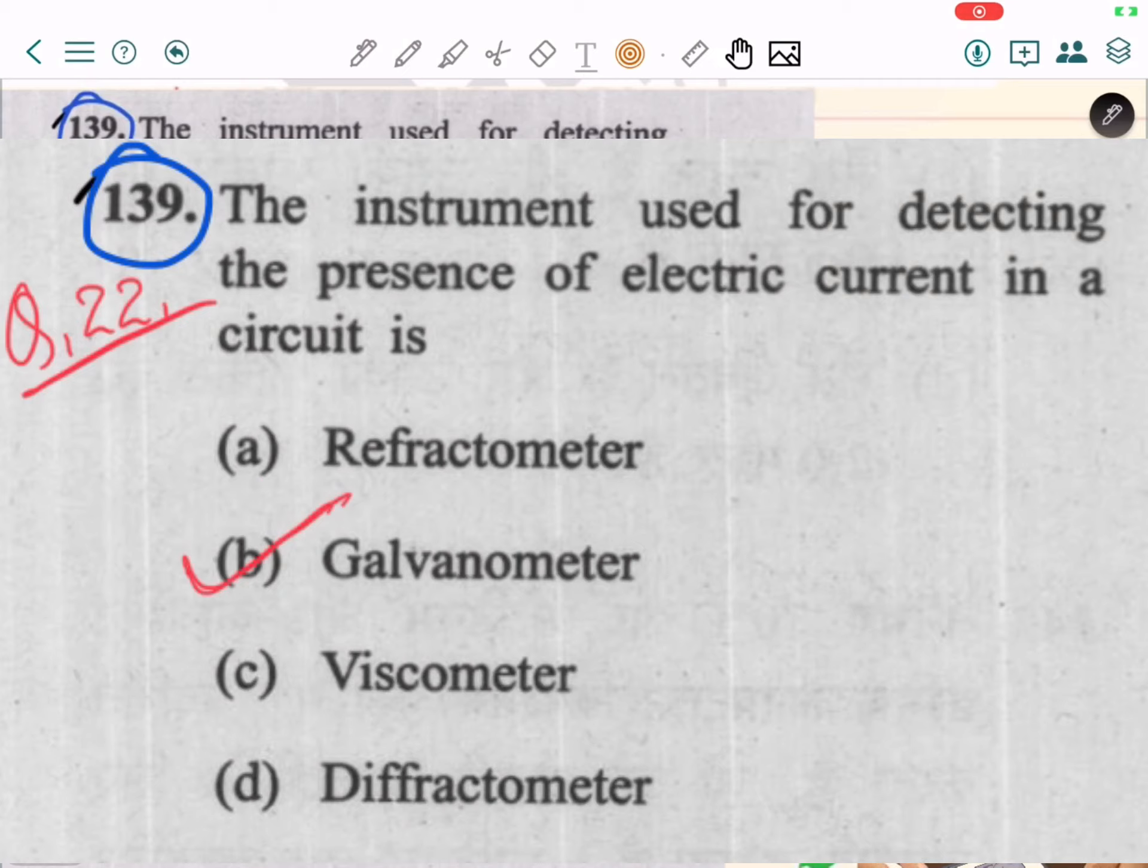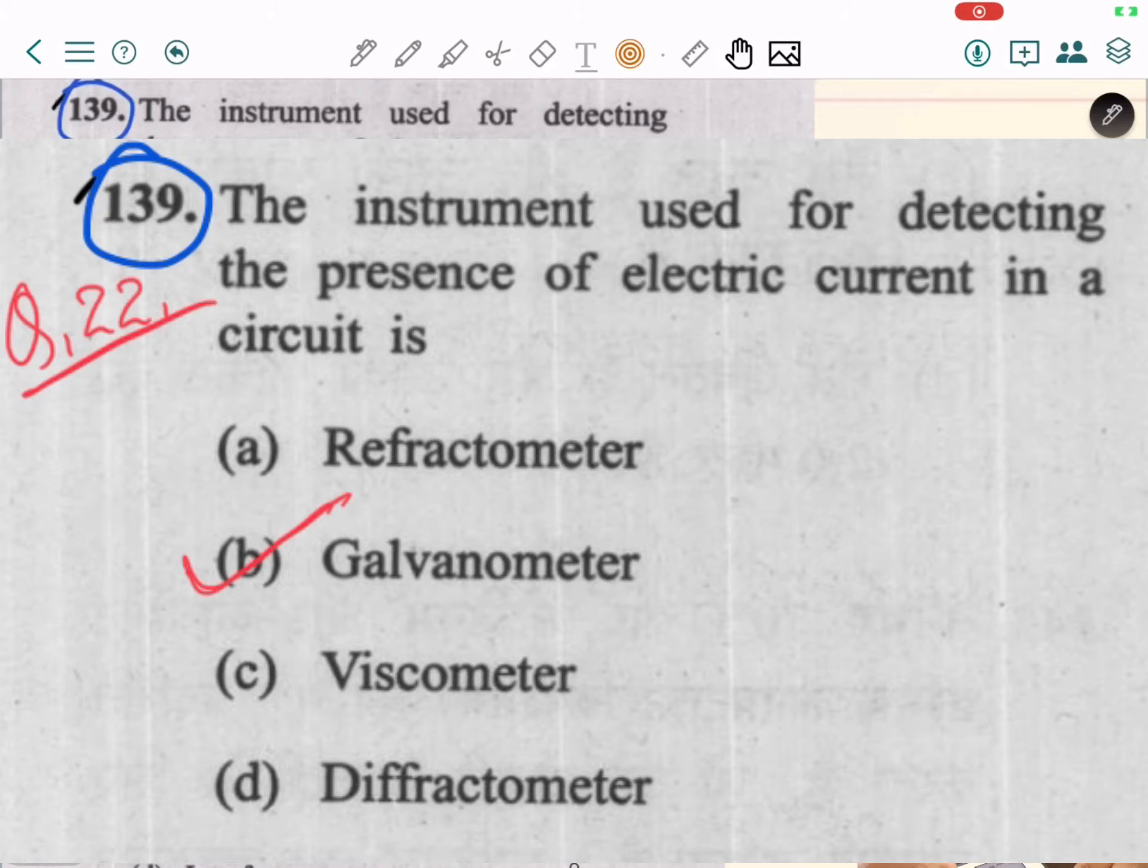Question number 22. The instrument used for detecting the presence of electric current in a circuit is galvanometer. It is factual knowledge.